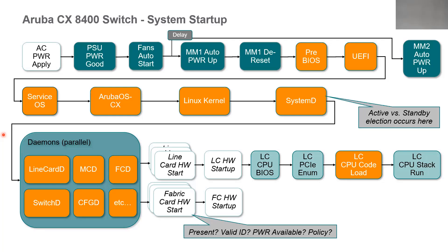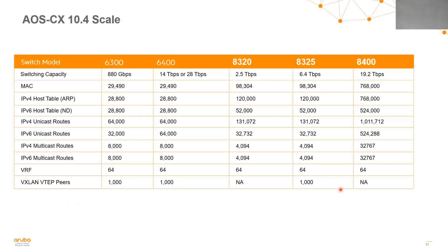Finally, I'll leave you with the Aruba CX scale as of code release 10.4. When scaling environments for data center or campus core use cases, we need to consider scale heavily — both the physical scale of interfaces on the switch, as well as the switching capacity and table scale. The 8400 is the big one with the large table scales. We can scale up to one million IPv4 unicast routes on this switch, and 768,000 MACs and ARPs. Comparing that to the other access-layer switches shows how we determine where to place this switch in a demanding environment.